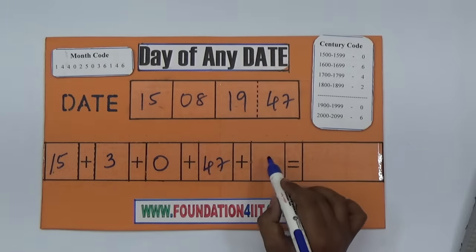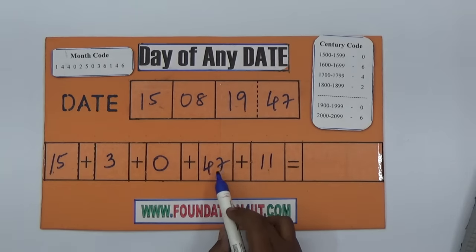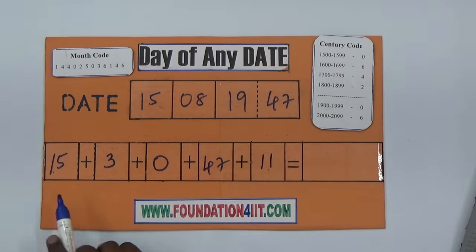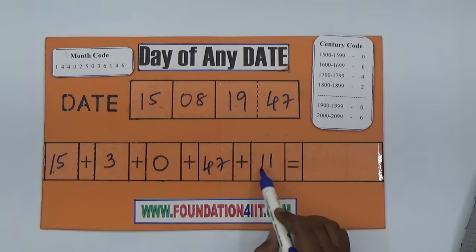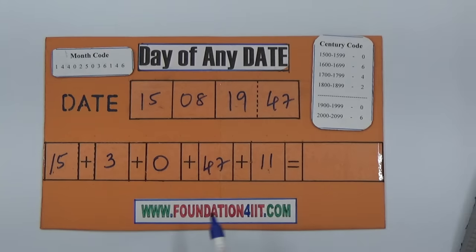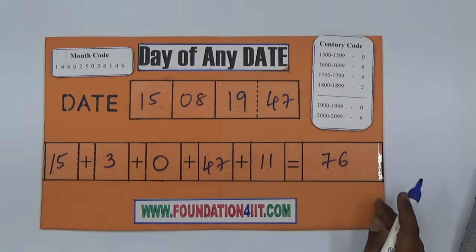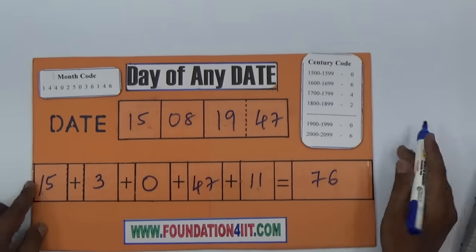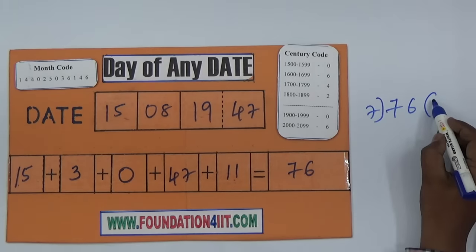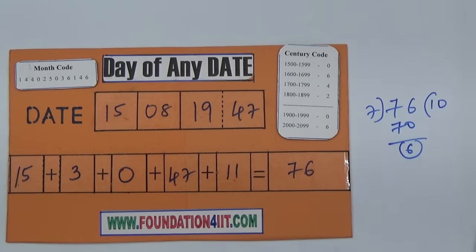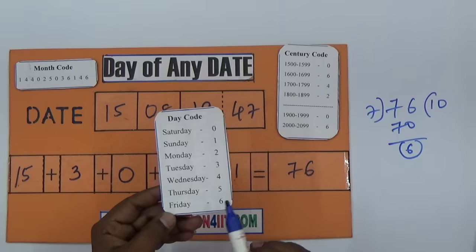In 47, how many leap years? Take 47 and divide by 4. 4 times 11 is 44, extra 3, so take 11. Now 15 plus 3 plus 0 plus 47 plus 11. 15 plus 3 is 18, 28, 76. Now divide 76 with 7. 7 times 10 is 70, and 6 is the remainder.